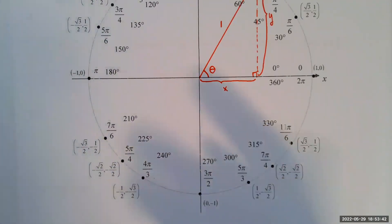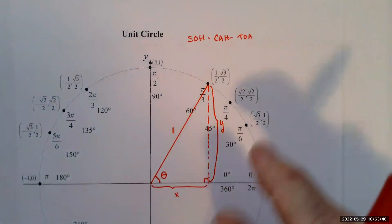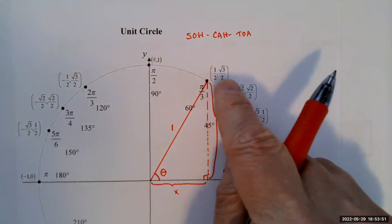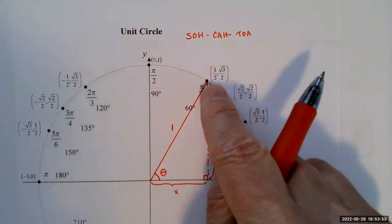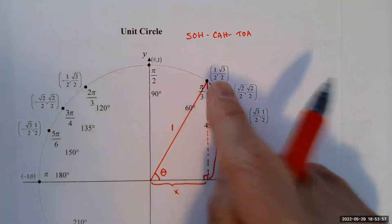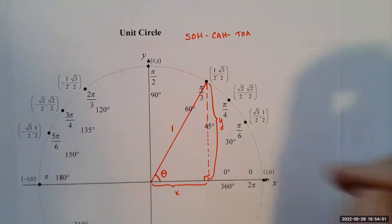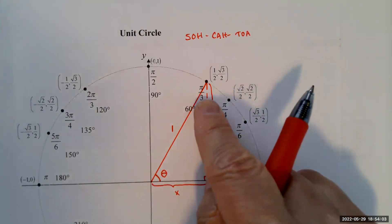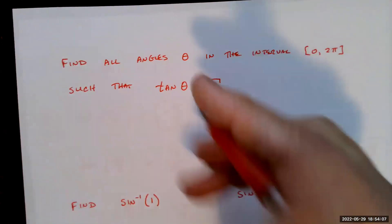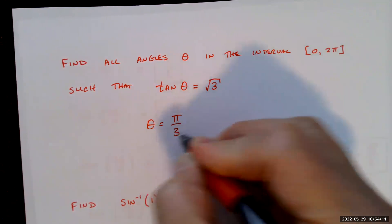In the first quadrant, √3/2 divided by 1/2 gives √3 — so tangent of π/3 equals √3. Since we want radians in the interval from 0 to 2π, one solution is theta equals π/3.